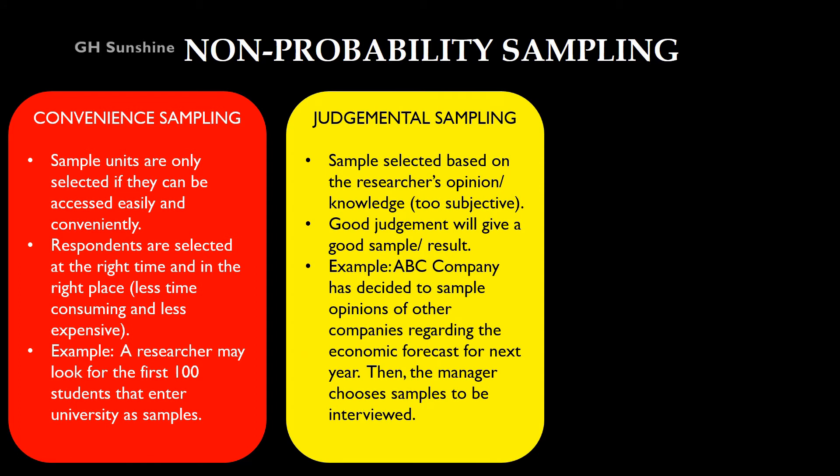The second non-probability sampling is judgmental sampling. The sample is selected based on the researcher's opinion or knowledge. Good judgment will give a good result, but bad judgment will of course give a bad result.